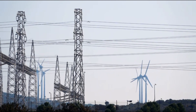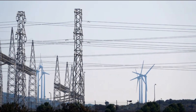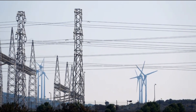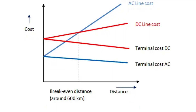Let's compare HVDC to high-voltage AC transmission. While AC is great for short distances, HVDC shines over long distances, offering lower energy losses and efficient power delivery. It's also crucial for connecting grids with different frequencies.